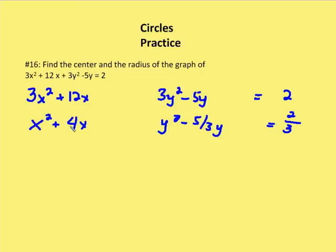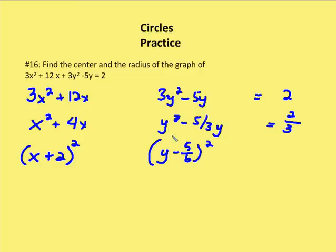Now we go through completing the square. With a leading coefficient of 1, we take the b value, divide it in half, and that becomes the constant in our perfect square binomial — then we square that value. So x squared plus 4x becomes x plus 2 squared, but x plus 2 squared equals x squared plus 4x plus 4.